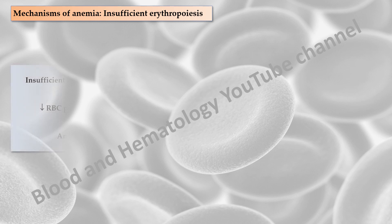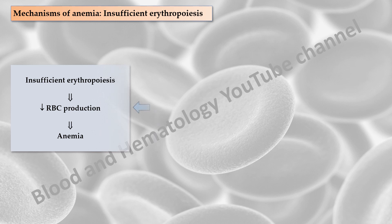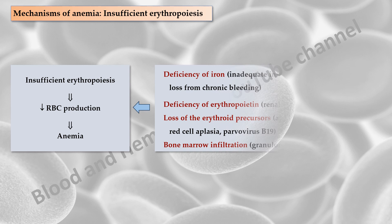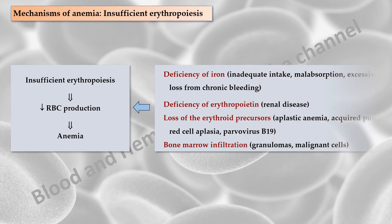Insufficient erythropoiesis refers to a decrease in the number of erythroid precursors in the bone marrow, resulting in decreased erythrocyte production and anemia. Many factors can lead to decreased erythrocyte production, including a deficiency of iron, deficiency of erythropoietin, loss of the erythroid precursors due to an autoimmune reaction or infection. Infiltration of the bone marrow with granulomas or malignant cells can also suppress erythropoiesis.